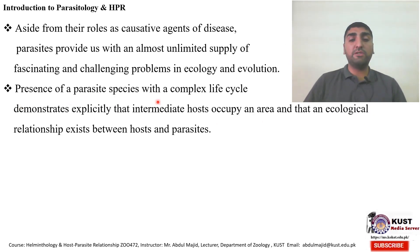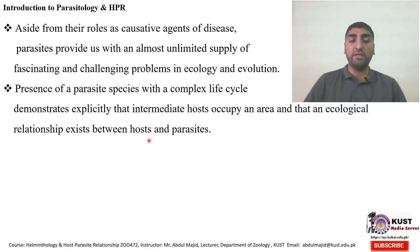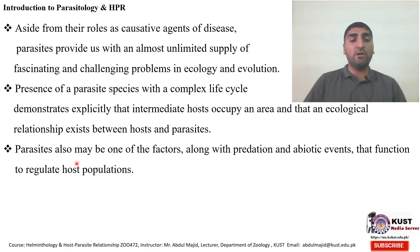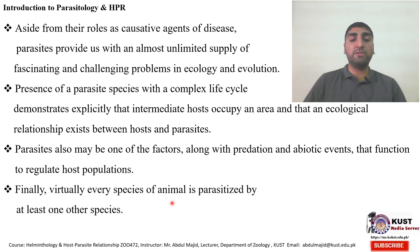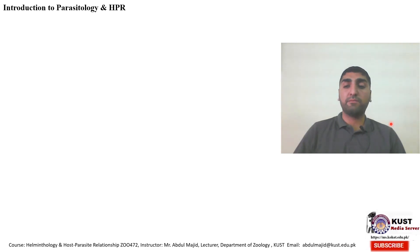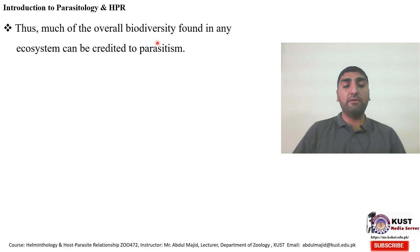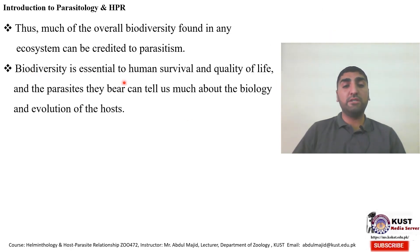The presence of a parasite species with a complex life cycle demonstrates explicitly that intermediate hosts occupy an area and that an ecological relationship exists between host and parasite. Parasites may also be one of the factors — along with predation and abiotic events — that function to regulate host population. Virtually every species of animal is parasitized by at least one other species, and thus much of the overall biodiversity found in any ecosystem can be attributed to parasitism. Biodiversity is essential to human survival and quality of life, and the parasites organisms bear can tell us much about the biology and evolution of the host.